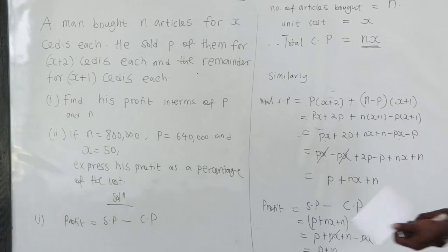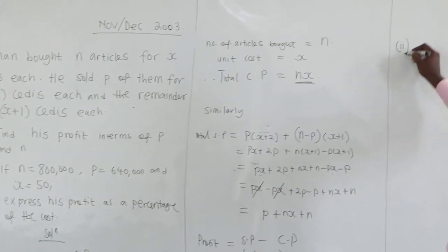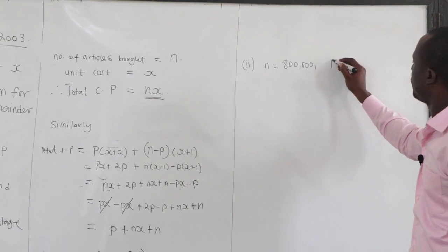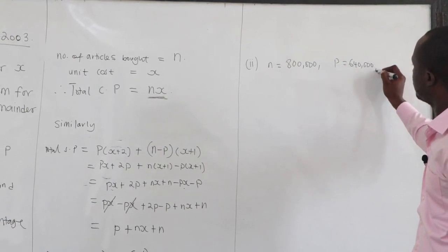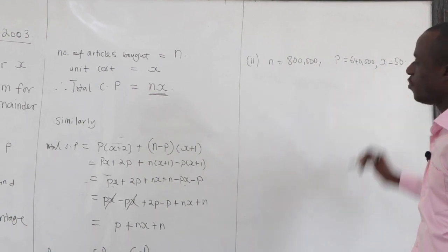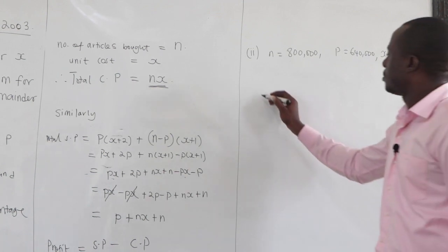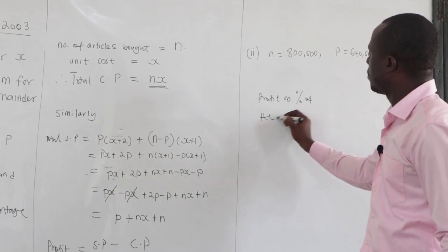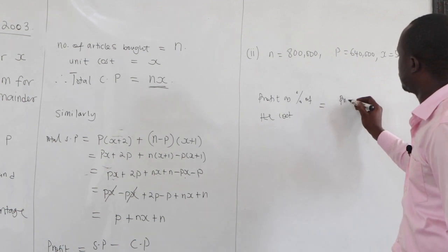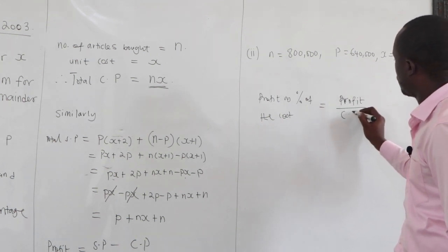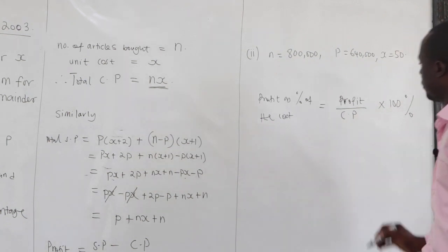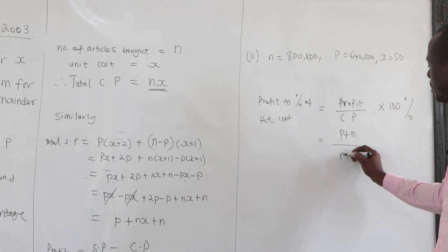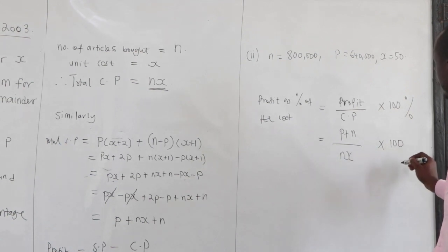For part two: if N is 800,000, P is 640,000, and X is 50, we should express the profit as a percentage of the cost. Profit as a percentage of cost is: (profit / cost price) times 100%. The profit was P plus N, and the cost price was NX.